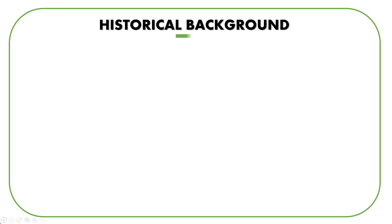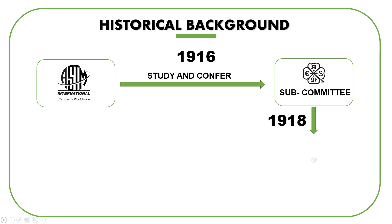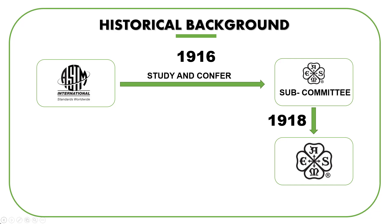Let us go through the historical background. In 1916, ASME — the American Society of Mechanical Engineers — appointed a subcommittee to study and confer with ASTM, the American Society for Testing and Materials. As a result, in the 1918 edition of ASME, specifications were nearly in agreement with ASTM. There were few materials in ASME for which ASTM had no corresponding material specification, and these material specifications got adopted by ASTM. So it was like a give-and-take situation, and we got two material standards: ASME and ASTM.